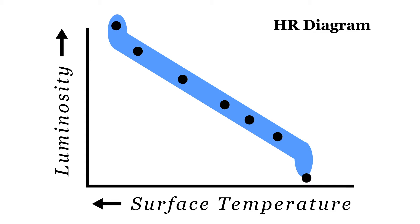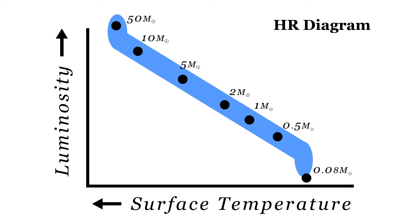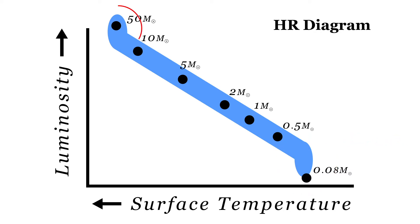Many main sequence stars are in binary systems, which allows the determination of their masses. Stars on the bottom right of the main sequence are very low mass red dwarfs, while stars near the upper left are high mass blue stars. Stellar masses range from 0.08 solar masses to well over 100 solar masses.